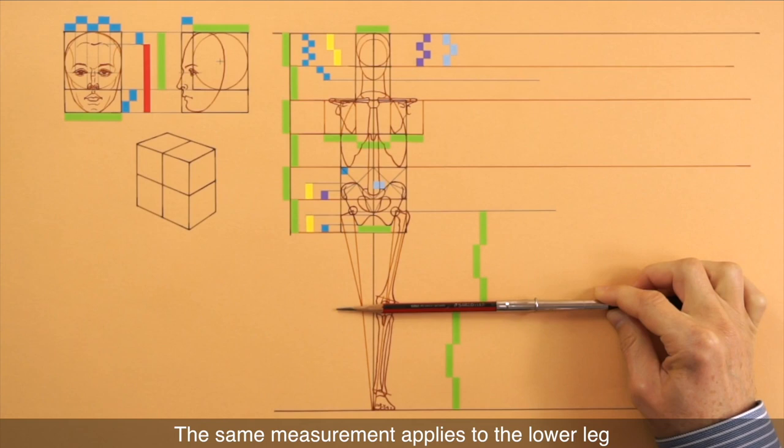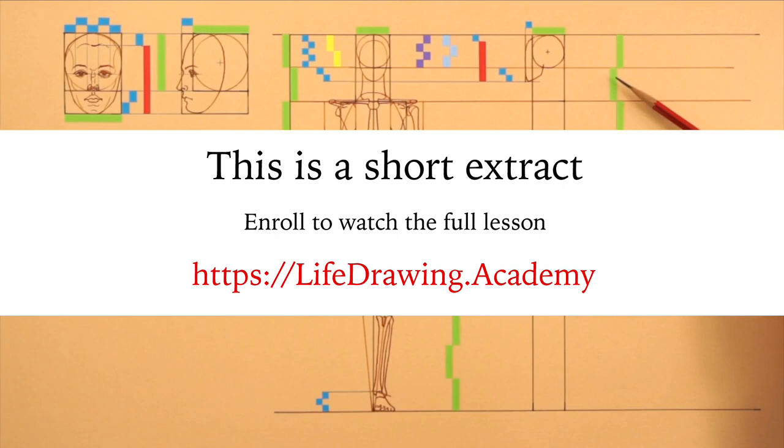The five eye measuring unit is used to define the pit of the neck level, the ribcage, and the waist and pelvis region.